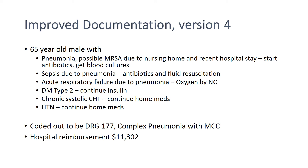So you could further tweak your documentation to read: '65-year-old male with pneumonia, possible MRSA due to nursing home residence and recent hospital stay, start antibiotics, get blood cultures. Sepsis due to pneumonia — place on antibiotics and fluid resuscitate. Acute respiratory failure due to pneumonia — treat with oxygen. Diabetes mellitus type 2, continue insulin. Chronic systolic congestive heart failure, continue home medications. Hypertension, continue home medications.' This would likely be coded as DRG-177, complex pneumonia with a major complicating condition. The reimbursement for this is $11,300.